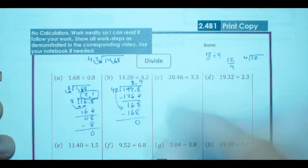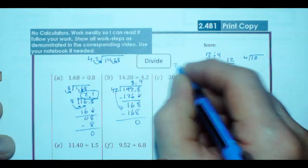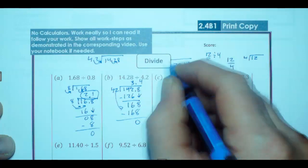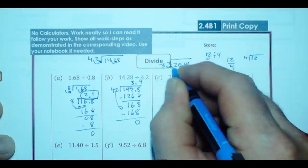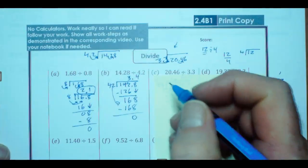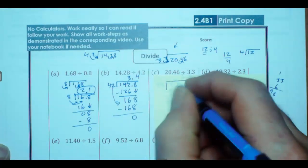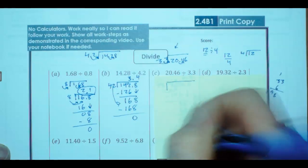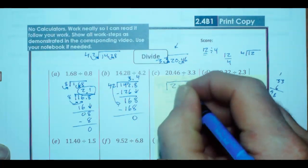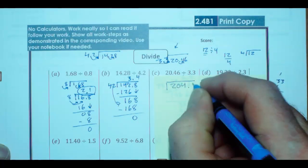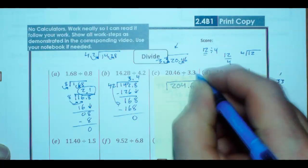Do another one here. Let's write it up here. 20.46 divided by 3.3, and again, I have to move that decimal. I'm just going to put down a sticky note here before I get started, so we make sure we have enough room going down. I think it might be a little tight on some of these. So, 204.6, and we're dividing that by 33.